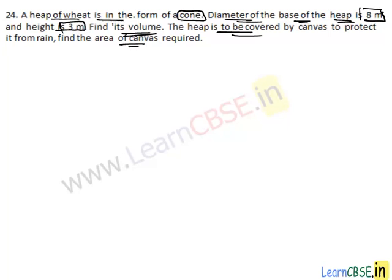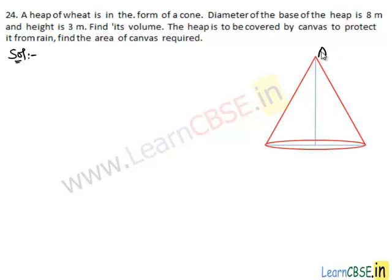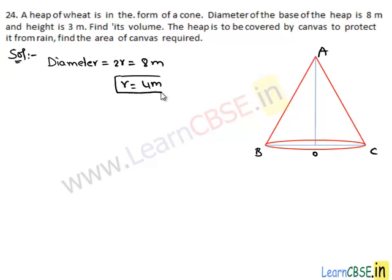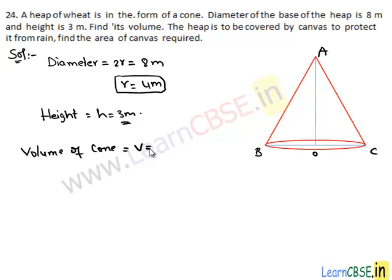So let's work out the problem. We take cone ABC, let the center of the base circle be O. We are given diameter, that is 2 times the radius of the base circle, which is 8 meters, so radius is 4 meters, and the height of the cone is 3 meters. We are asked to find volume and surface area. We know that volume of a cone is one-third pi r squared h, where r is the radius of the base circle and h is the height of the cone, that is AO, which is 3 meters.